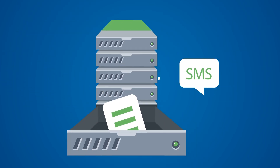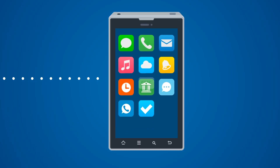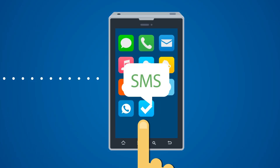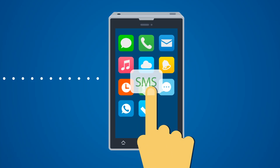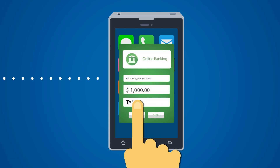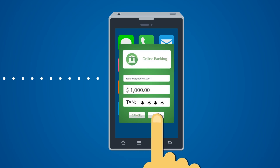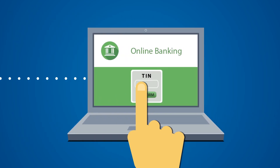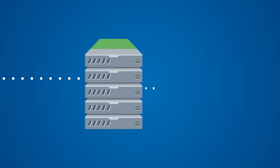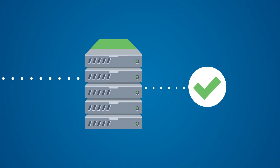The banking server then stores this data temporarily, then sends you an SMS on your registered mobile device. The SMS tells you the recipient, the amount of money, and you need to confirm it with a code. You type in the code onto your desktop computer, it's sent to the banking server, which knows the code and then confirms the transaction.